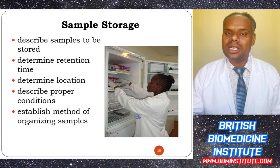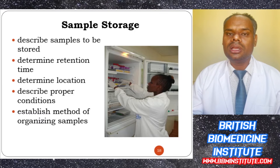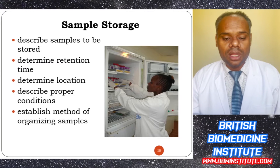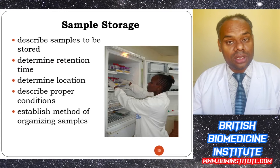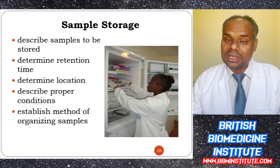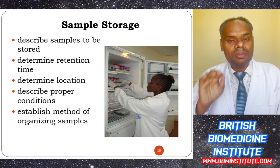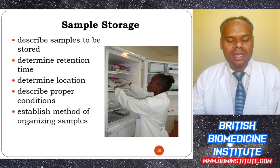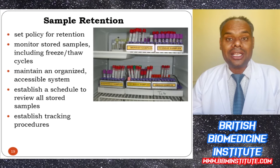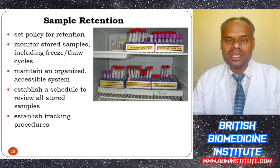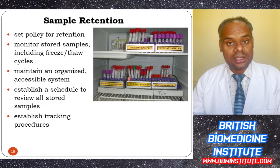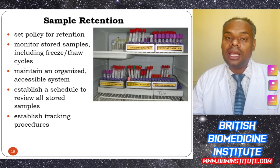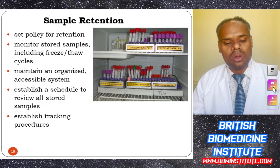Sample storage must be carried out in accordance with the required SOP. We have to determine the retention time, the storage location, the proper conditions for storage, and establish a method of organizing the samples. For sample retention, there must be a written SOP, and we must monitor samples including freezer and thaw cycles regularly, maintain an organized accessible system, and establish a schedule to review stored samples and tracking procedures.